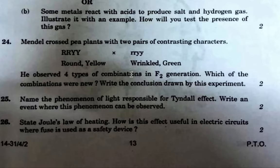Next, name the phenomenon of light responsible for the Tyndall effect — the answer is scattering of light. An event where this can be observed: danger signals use red color. Next, Joule's law of heating: H = I²Rt, which means heat is directly proportional to the square of the current, directly proportional to resistance, and directly proportional to time. This effect is useful in electrical fuses — when excess current flows, the fuse breaks and the circuit is protected from damage.